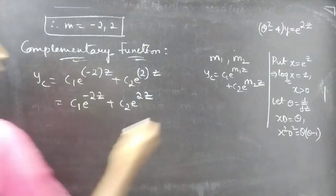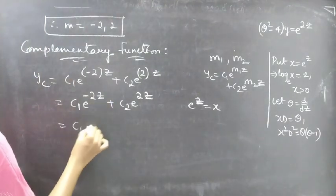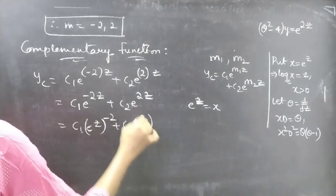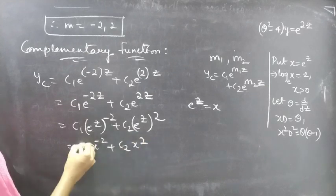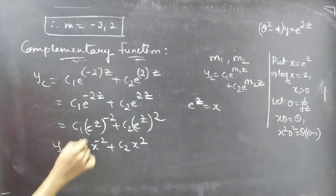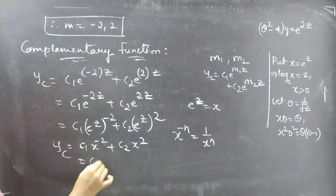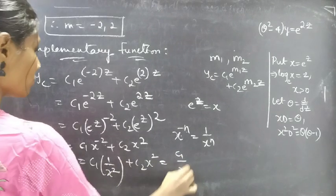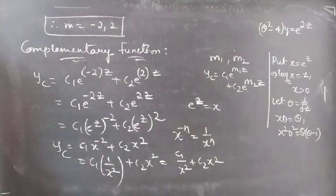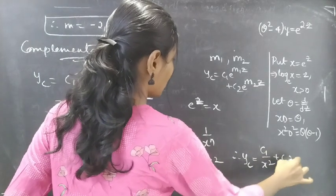We need to write yc in terms of x by replacing e to the power z with x. We write e to the power minus 2z as (e^z)^(−2) and e to the power 2z as (e^z)^2, then replace e^z by x to get c1 x to the power minus 2 plus c2 x squared. Using x to the power minus n equals 1 by x to the power n, yc equals c1 by x squared plus c2 x squared.